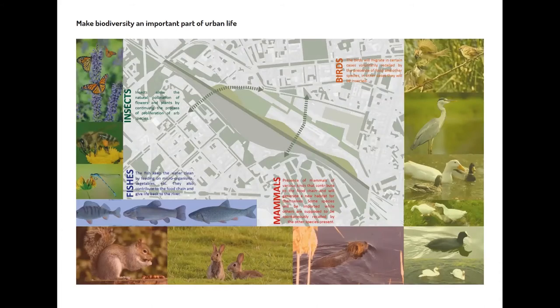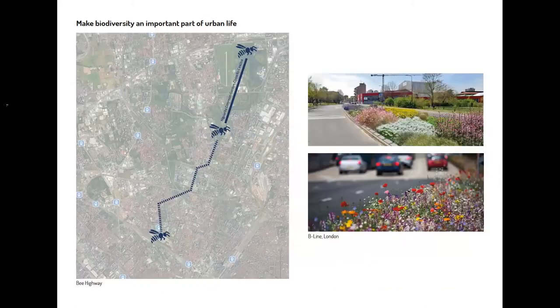When I use the word biodiversity, I don't refer only to plants — I also refer to animals like insects, fish, mammals, and some types of birds. Regarding insects, I would like to emphasize bees since they are very important for the environment. I checked out the existing bee highway project in Milan and I propose to extend this route by my proposal until my local area, until Farini.